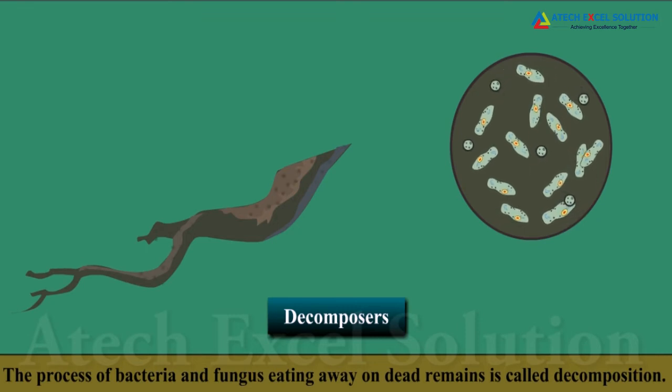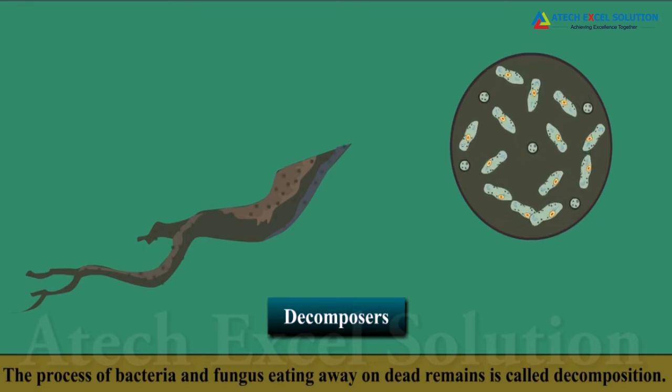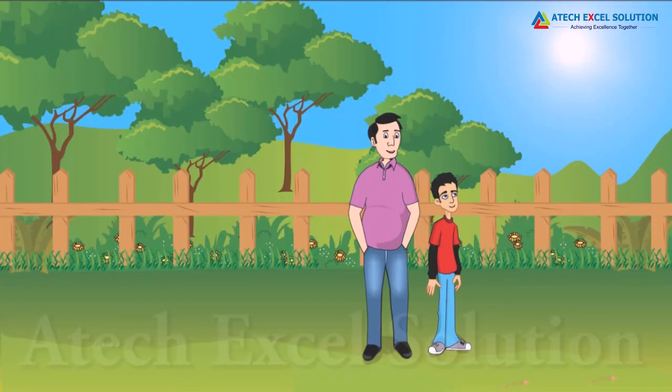So, an ecosystem is when it has producers, consumers and decomposers.